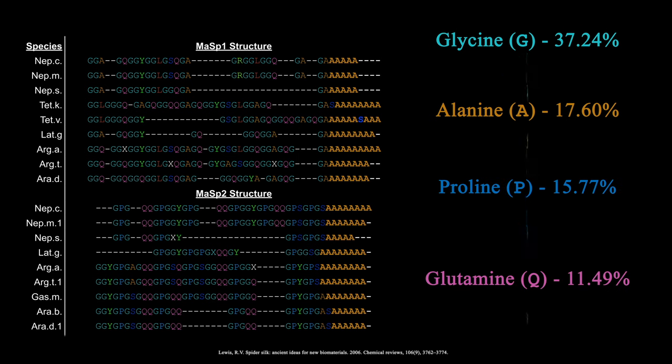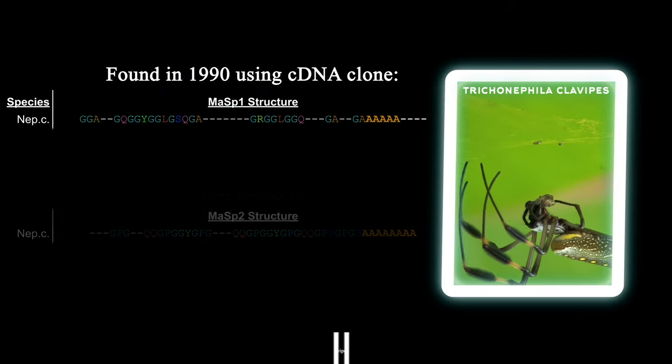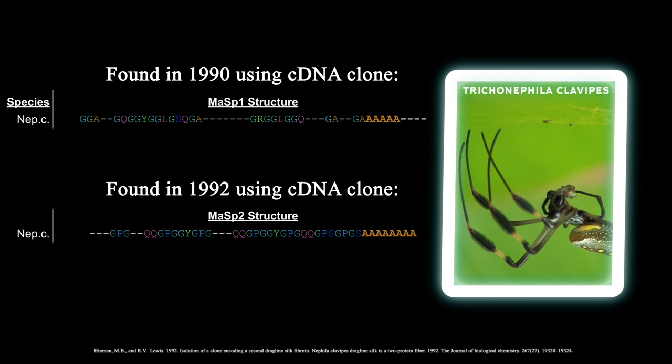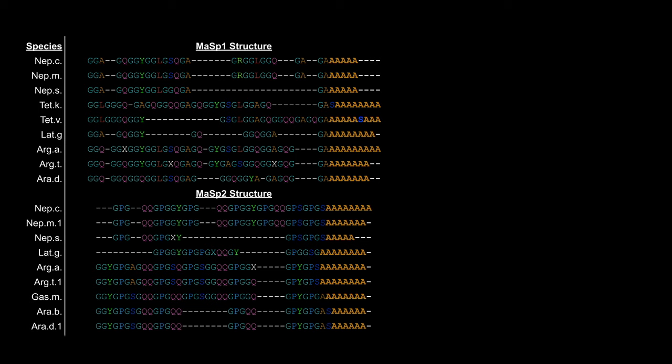MaSp1 and MaSp2 both play important roles in dragline silk. The amino acid composition of MaSp1 from the spider Trichonephyla clavipes was found using a partial cDNA clone. Later, MaSp2 was found and its amino acid composition was determined in the same manner. The amino acid sequences for MaSp1 and MaSp2 in several orb-weaving species can be seen here.